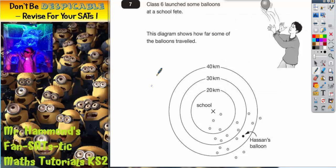Question 7 is all about balloons. It says class 6 launched some balloons at a school fete. These sorts of balloons are the sorts of balloons that have got helium in them, they rise up in the sky on their own and they can travel for miles because they can be taken along by the wind.